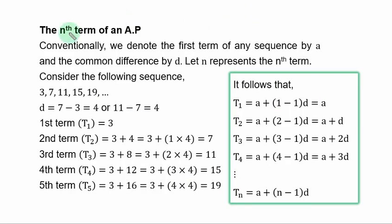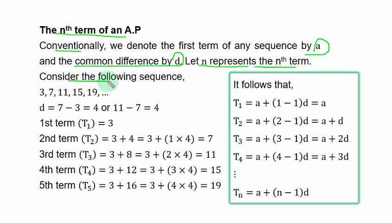Next, we shall discuss the Nth term of an arithmetic progression. Conventionally, we denote the first term of any sequence by A and the common difference by D. Let N represent the Nth term. Consider the sequence: 3, 7, 11, 15, 19. We want to use this sequence to establish the Nth term formula for any arithmetic progression.